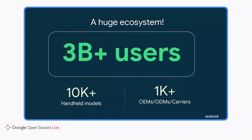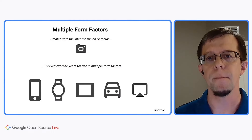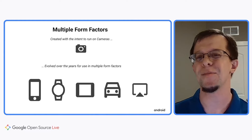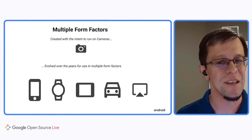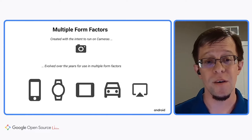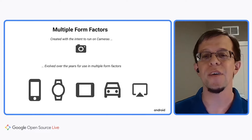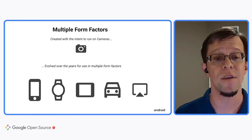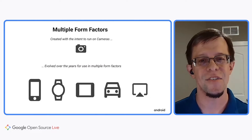Android supports a robust, diverse, and worldwide ecosystem: 3 billion-plus users, 10,000-plus handheld models, and 1,000-plus OEMs, ODMs, and carriers. Though most well known for running on phones, Android was originally designed to run on cameras. Times have changed and now Android has grown to include tablets, watches, TVs, and automobiles. Through Internet of Things integration, Android can communicate with everything from your lights to your sound system to your refrigerator.